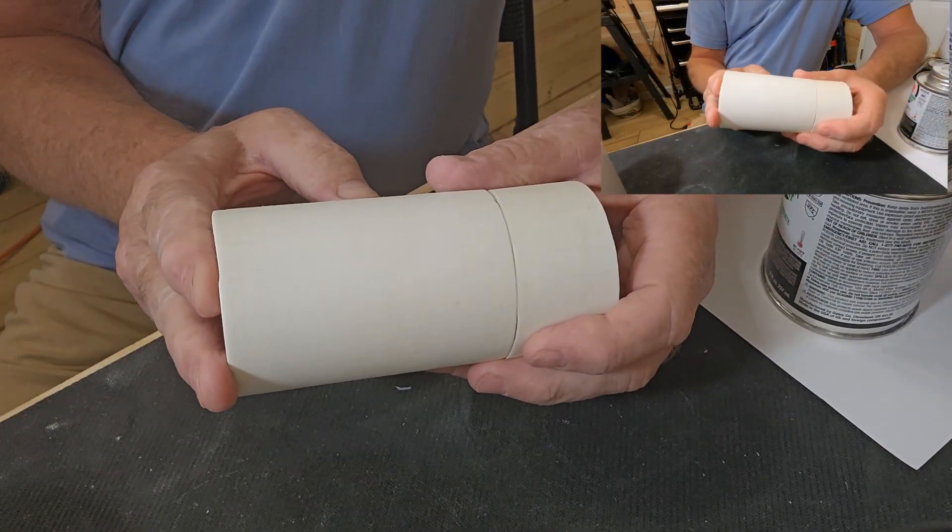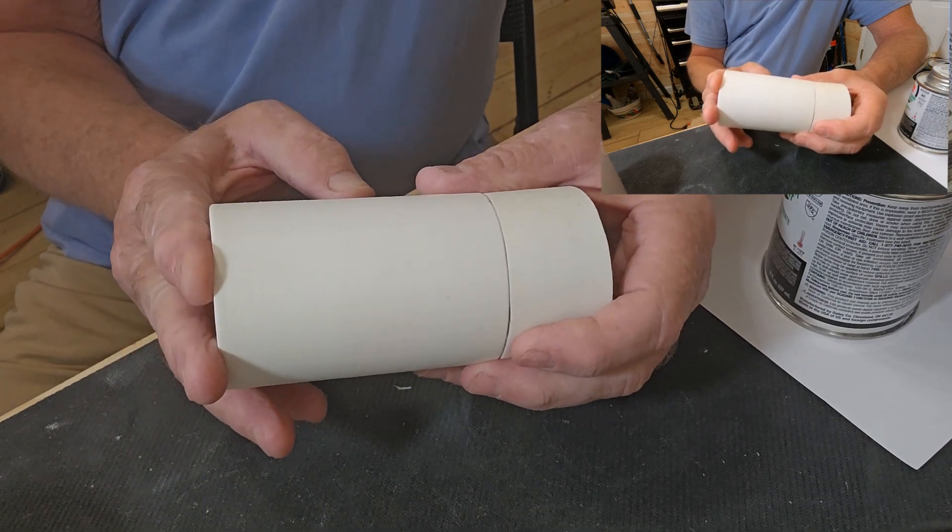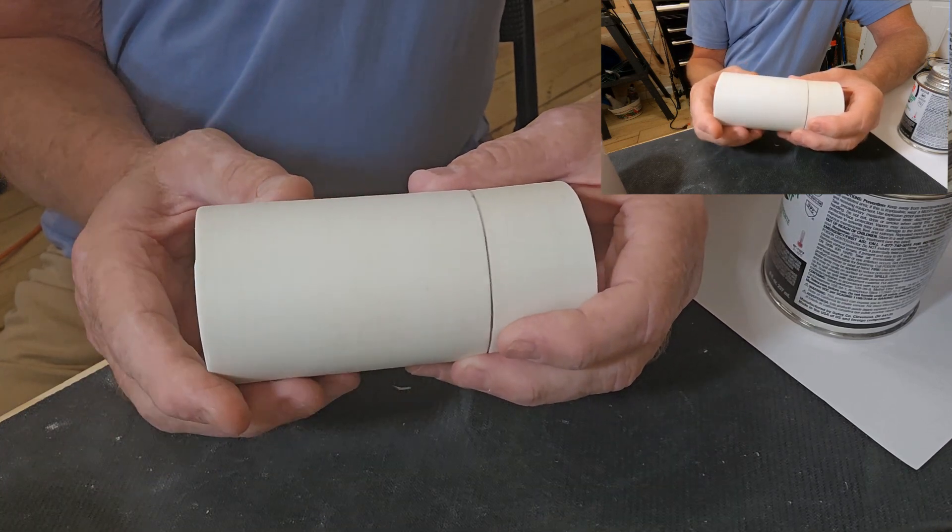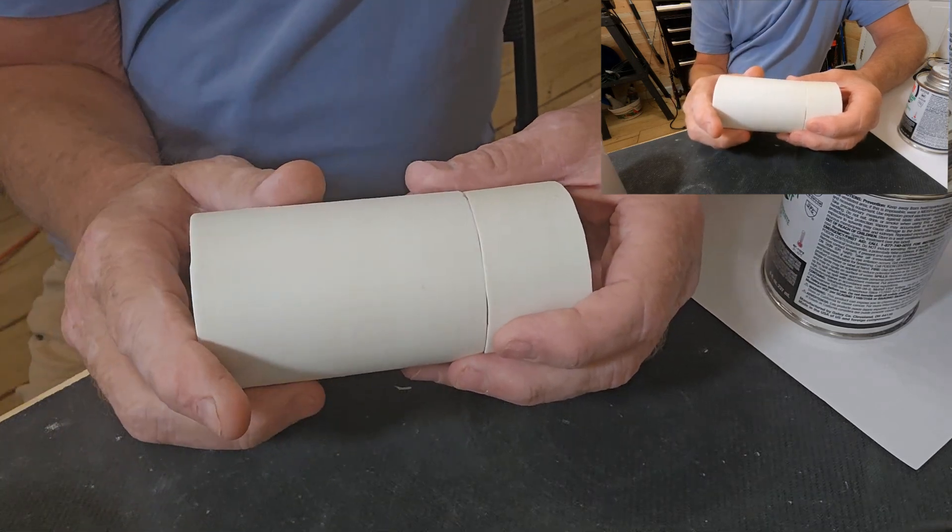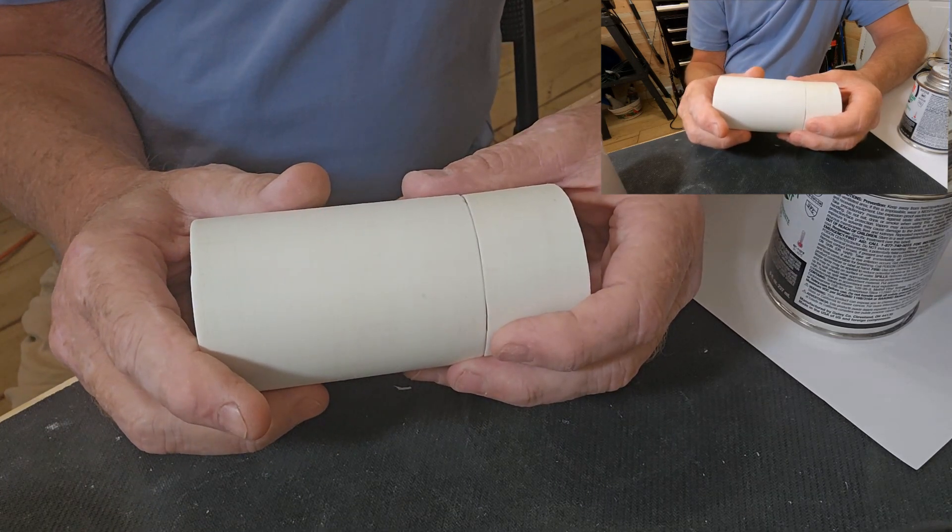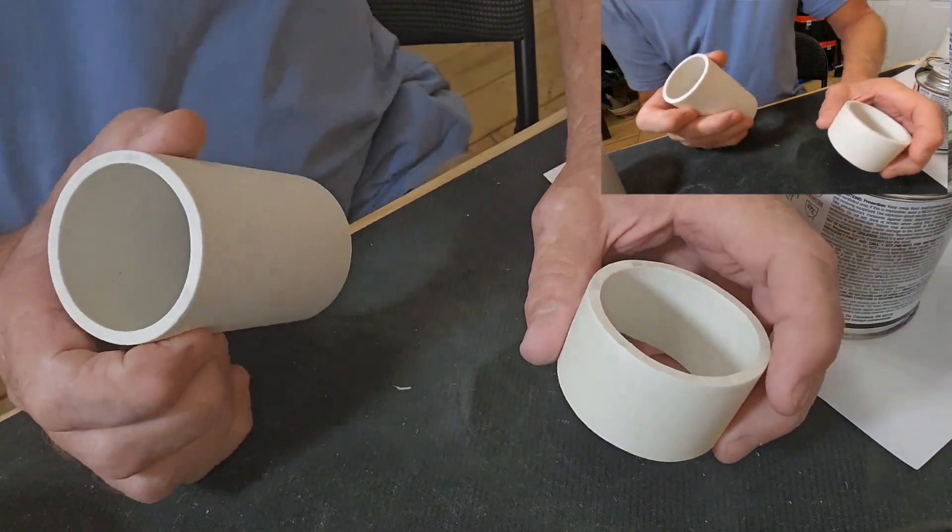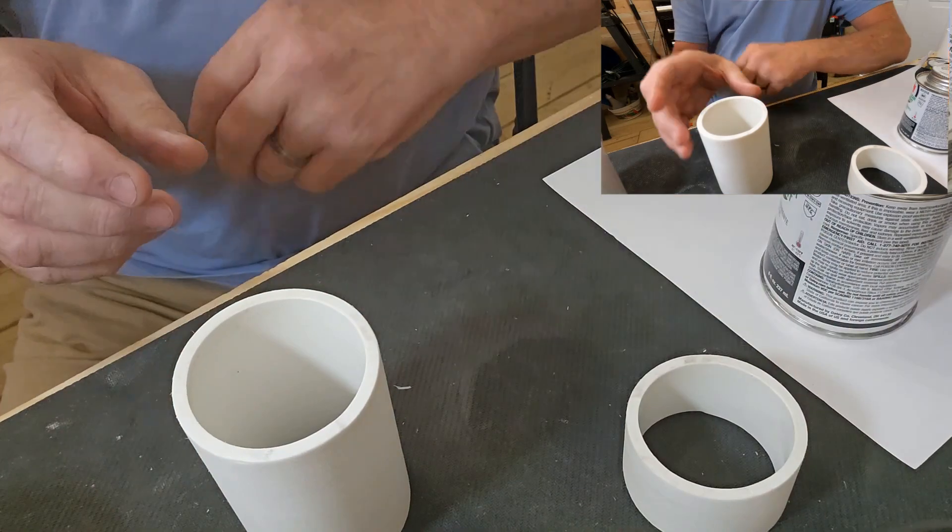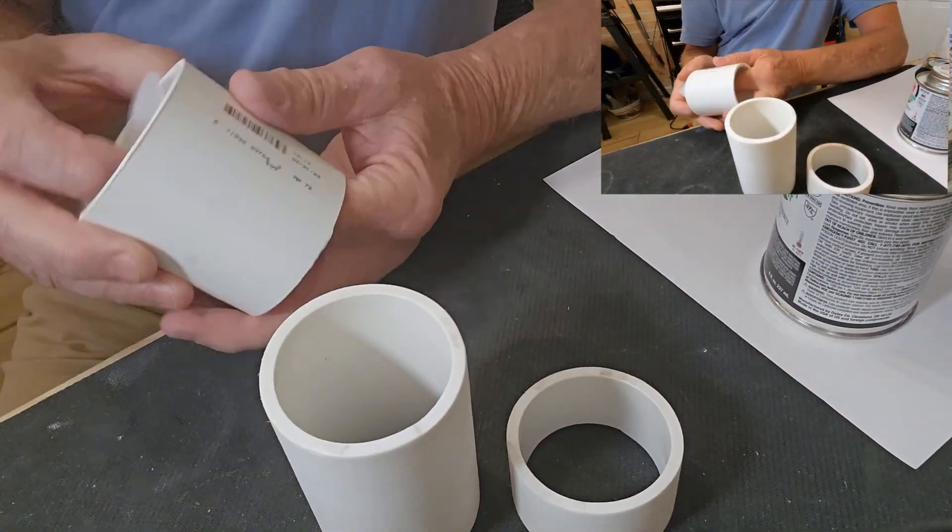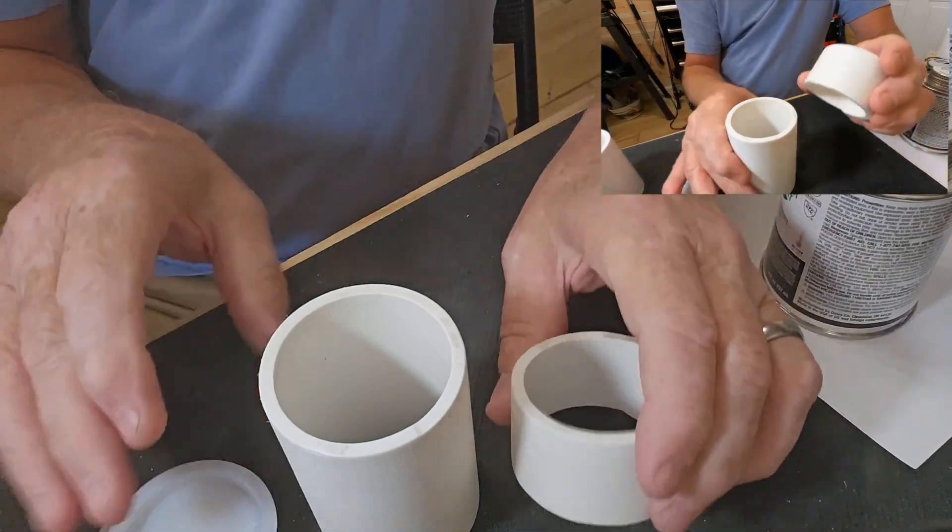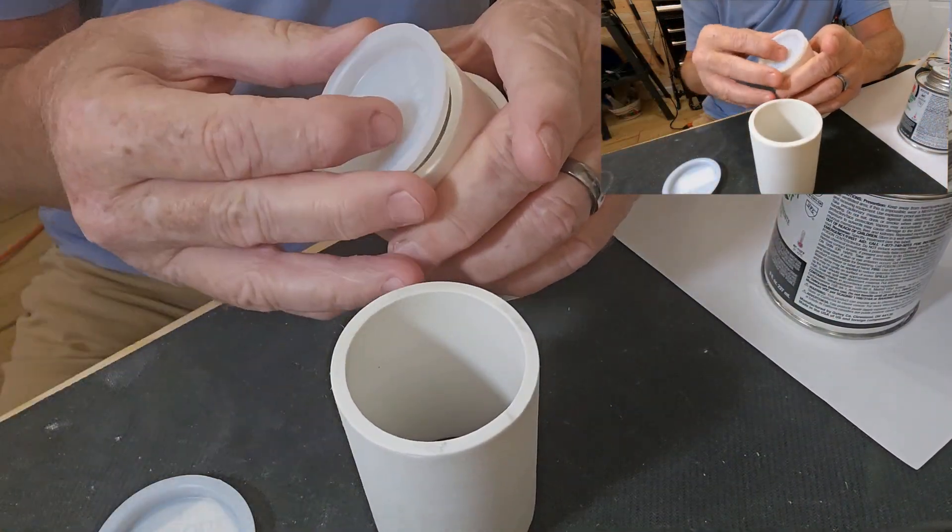They sell this in two foot sections at Lowe's for eleven dollars and something, so you can get four fluid beds out of the two foot piece. So that would be about three dollars plus three sixty-eight, but you're going to need a short piece of pipe to put up in your coupling so your end cap will fit on.